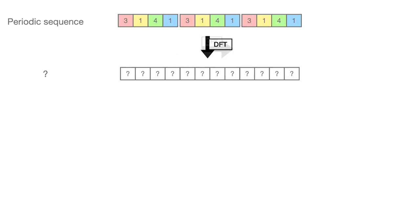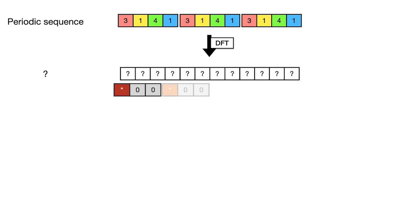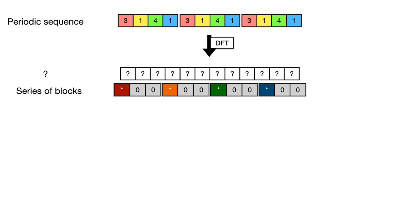Let's look at a bigger example to really see what the DFT of a periodic sequence looks like: 3141 repeated three times, so it has period four. We're going to see that because the sequence has period four, the DFT is going to consist of four blocks, each one with a pivot, and the rest are zeros.